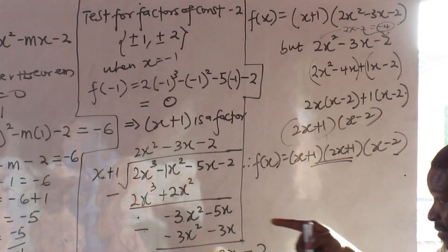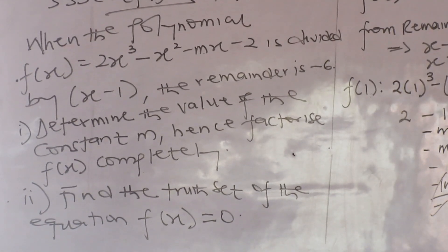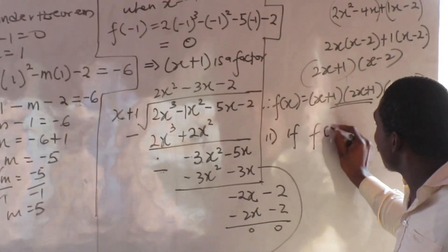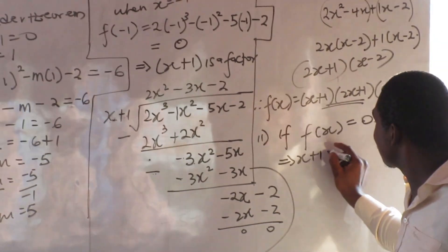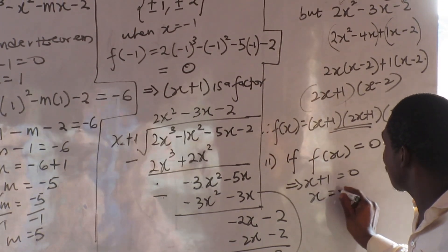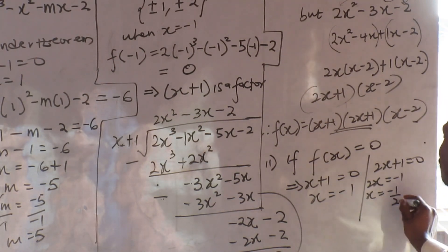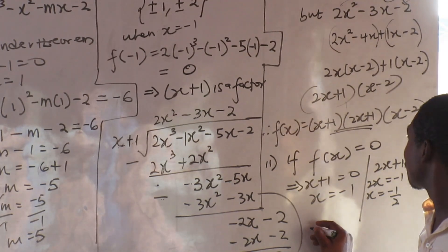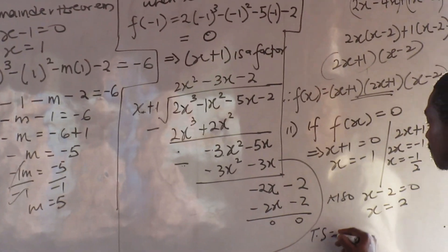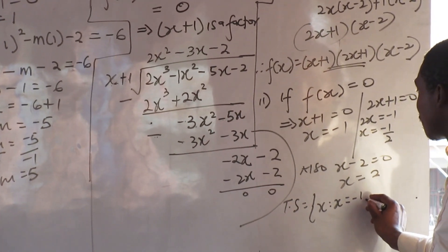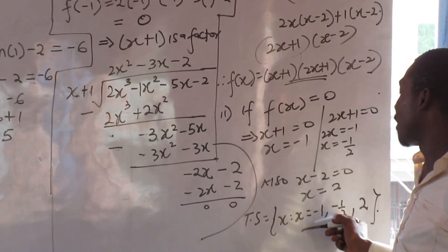The last part: find the truth set of the equation f(x) equals 0. Setting each factor to zero: x plus 1 equals 0 gives x equals minus 1. Then 2x plus 1 equals 0, so 2x equals minus 1, giving x equals minus one-half. And x minus 2 equals 0 gives x equals 2. So the truth set is x equals {minus 1, minus one-half, and 2}.